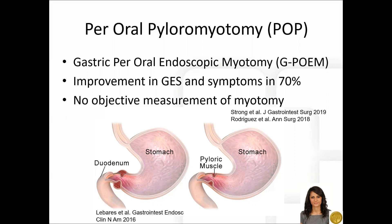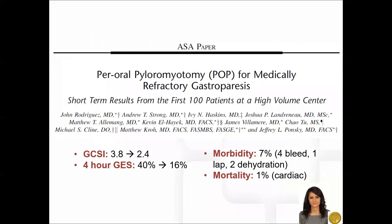There has been, however, to date no objective way to measure the extent of myotomy performed in a POP procedure in correlation to symptomatic outcomes. The POP procedure has been demonstrated to be both safe and effective at improving patient symptoms, with an improvement in the gastroparesis cardinal symptom index from 3.8 to 2.4, and objective improvement with gastric emptying studies.